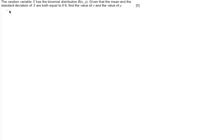We have the question that the random variable X has a binomial distribution. Given that the mean and the standard deviation of X are both equal to 0.9, find the value of n and find the value of p. So what I know is that the mean or the expectation of X is equal to 0.9, and we know that the standard deviation, sigma, that is also equal to 0.9.